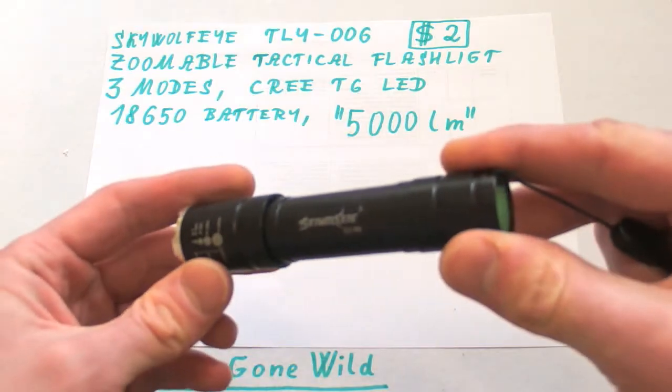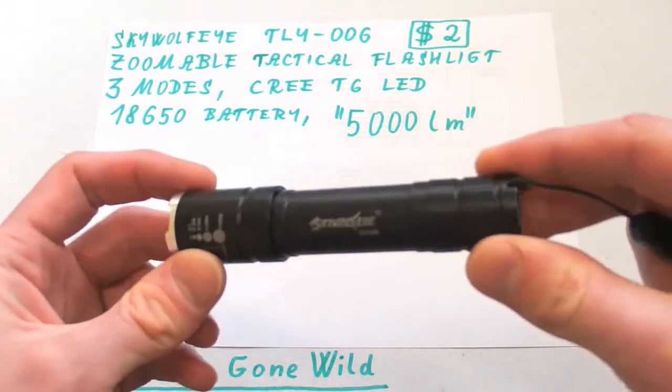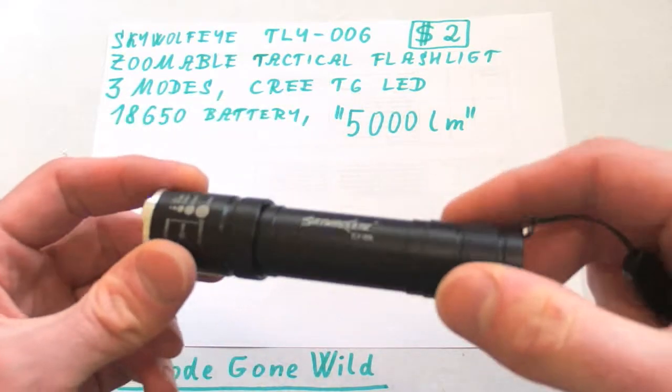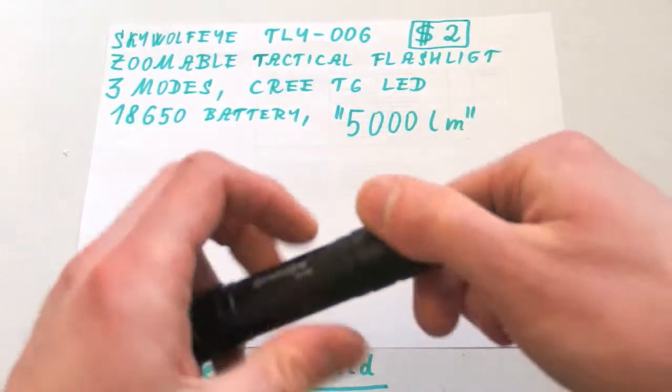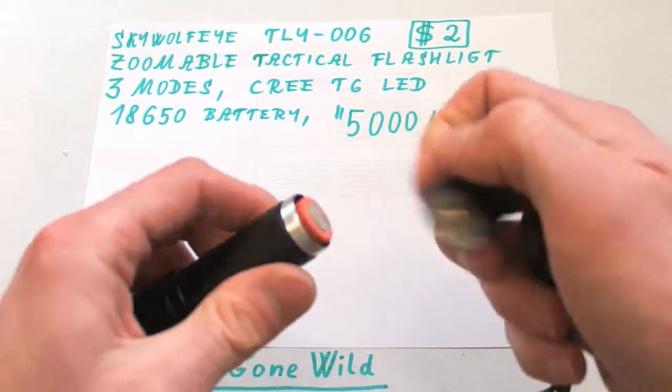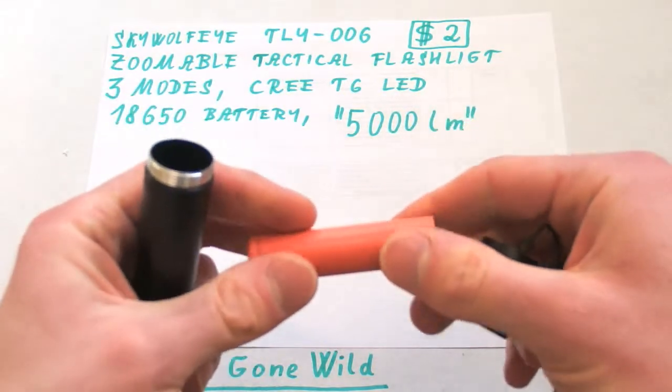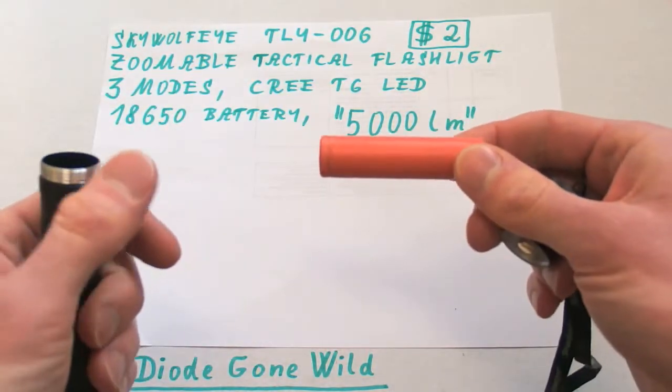It claims to have Cree T6 LED in it, but the listing can actually say absolutely anything. It runs on lithium-ion 18650 battery and claims to have 5000 lumens.